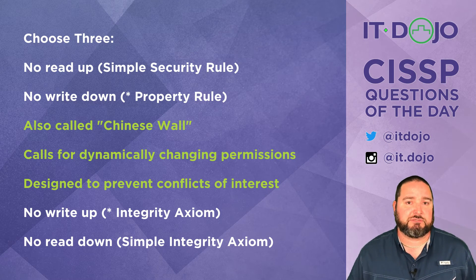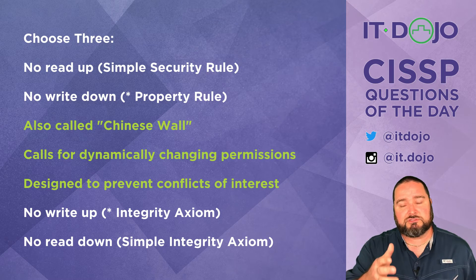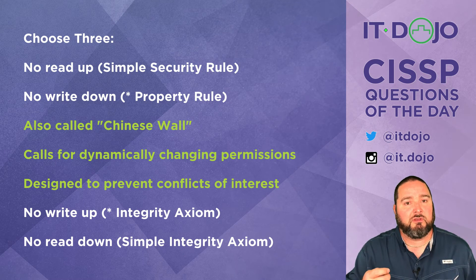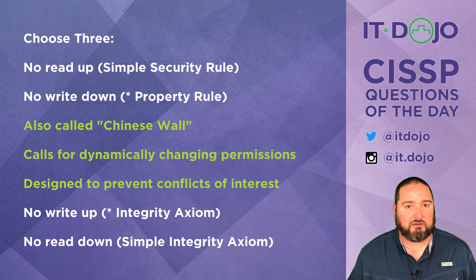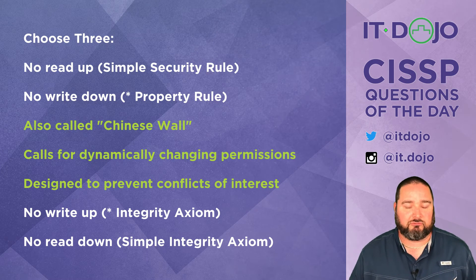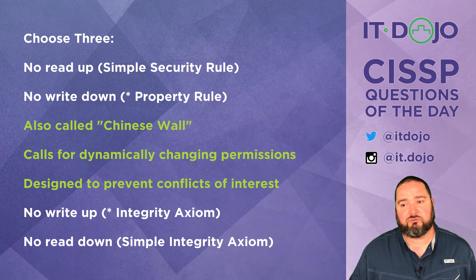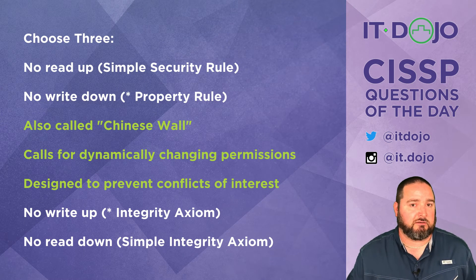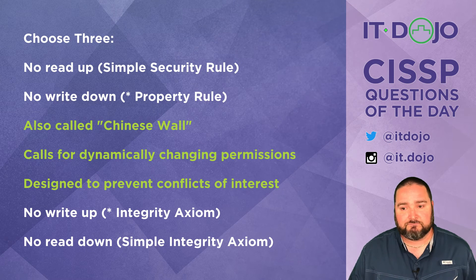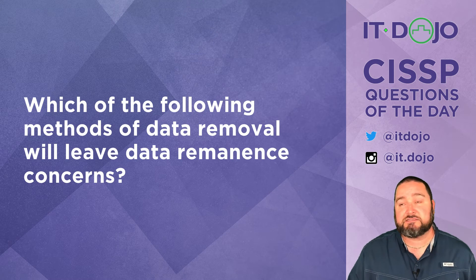One of the toughest things to grasp about the Chinese Wall is how dynamically changing permissions apply in real life, because most modern operating systems don't support that concept — the idea that you're only allowed to open file one if you've never opened file two. It doesn't neatly fit into what most of us use every day. That's the quick gist of the Chinese Wall model — it's one of the least discussed and least well understood models for CISSP candidates.